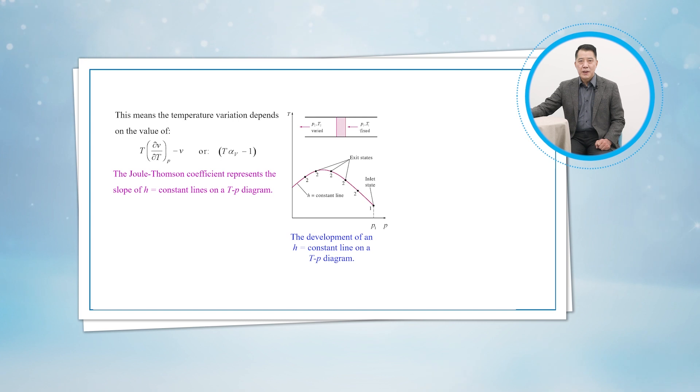A careful look at its defining equation reveals that the Joule-Thomson coefficient represents the slope of constant H lines on a T-P diagram. Such diagrams can be easily constructed from temperature and pressure measurements during throttling process. A fluid at a fixed temperature and pressure, T and P,